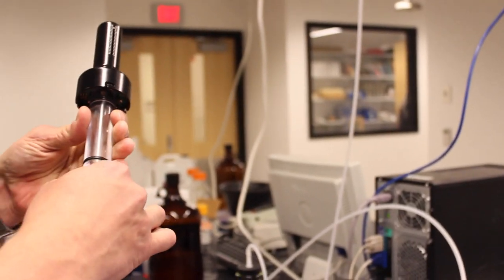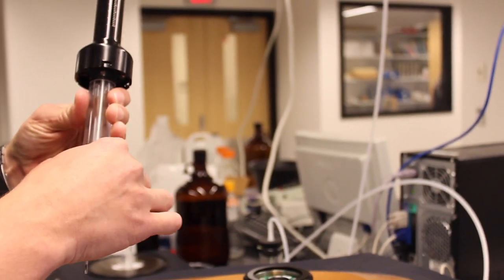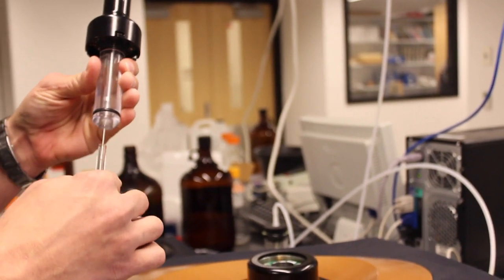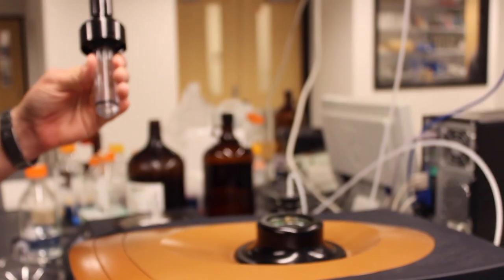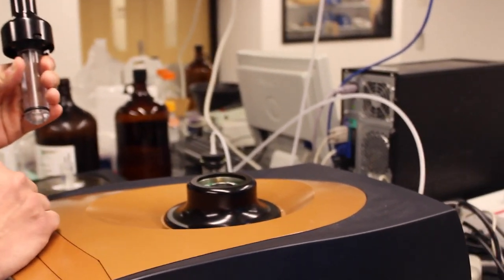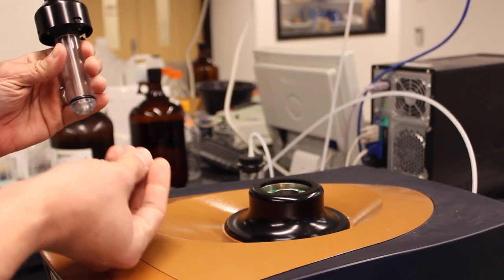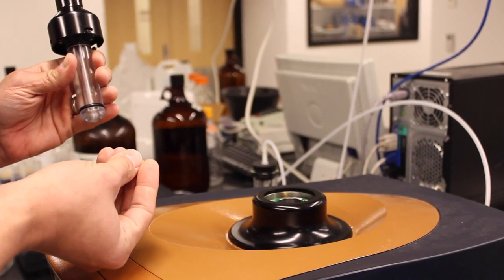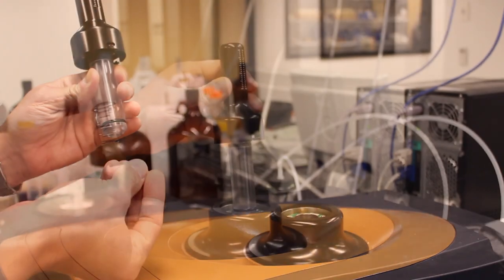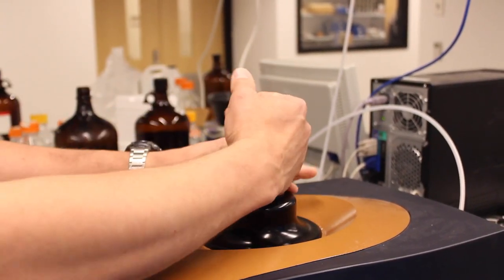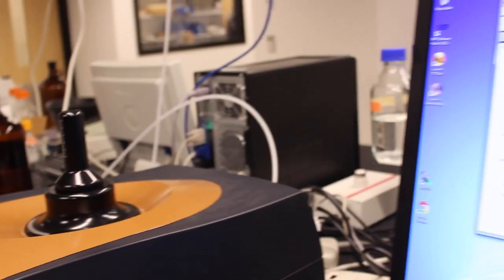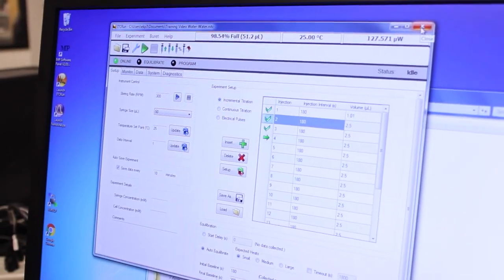When you're finished with your experiment please be sure to remove the syringe from the burette thoroughly clean and dry the syringe as well as clean and dry the cell. Leave the cell filled with air only so that it does not cause problems for the next user. When the cell is clean and dry you can reinstall the burette handle with no syringe installed.